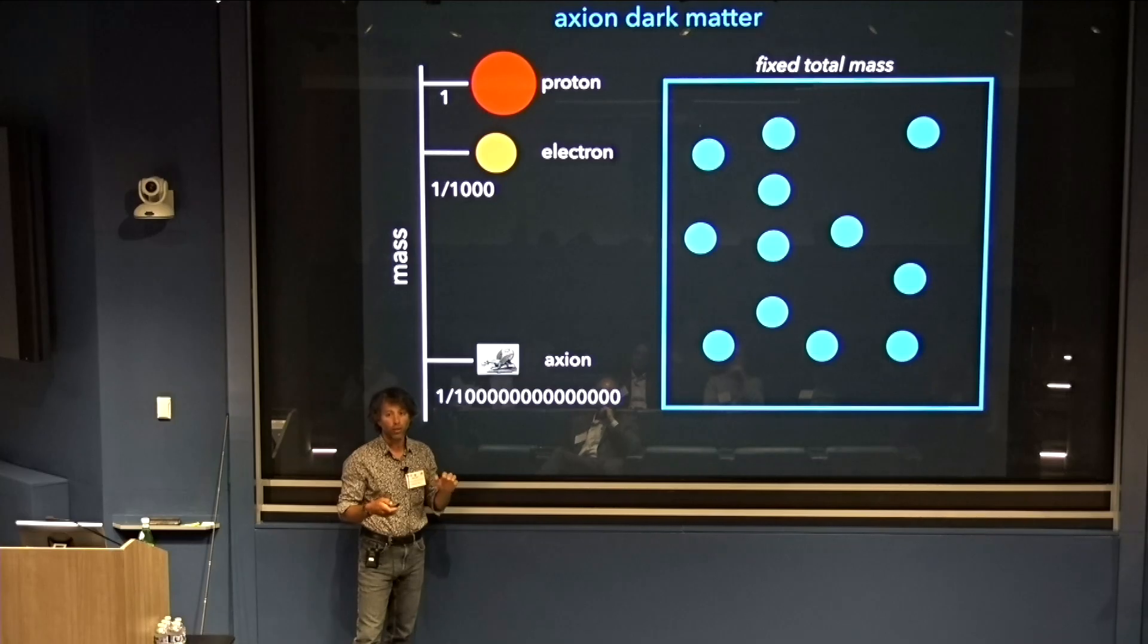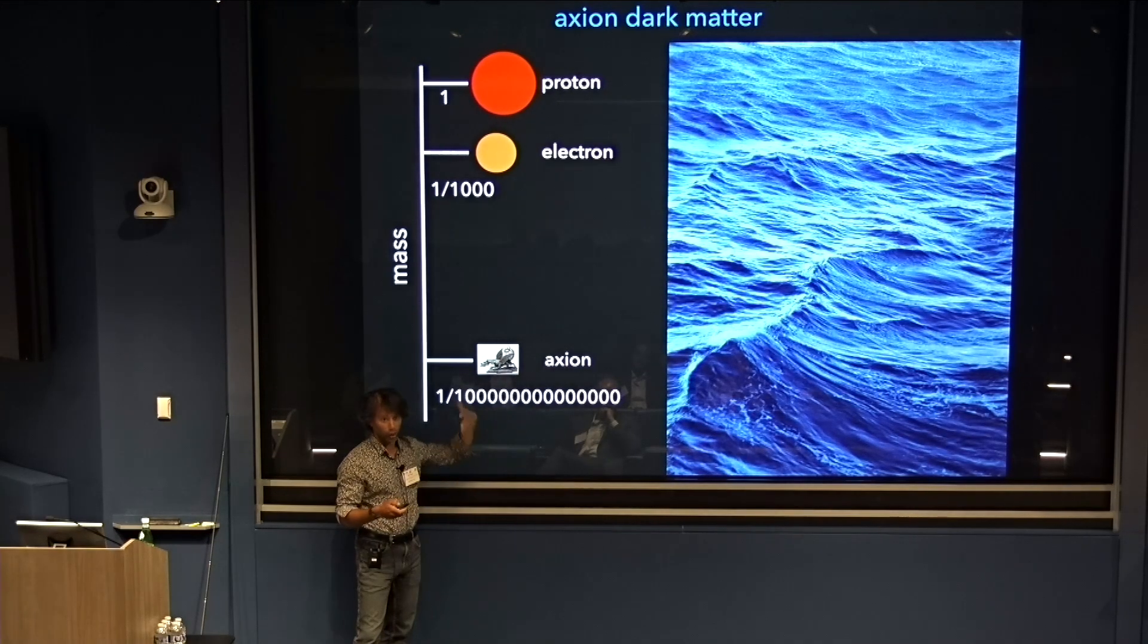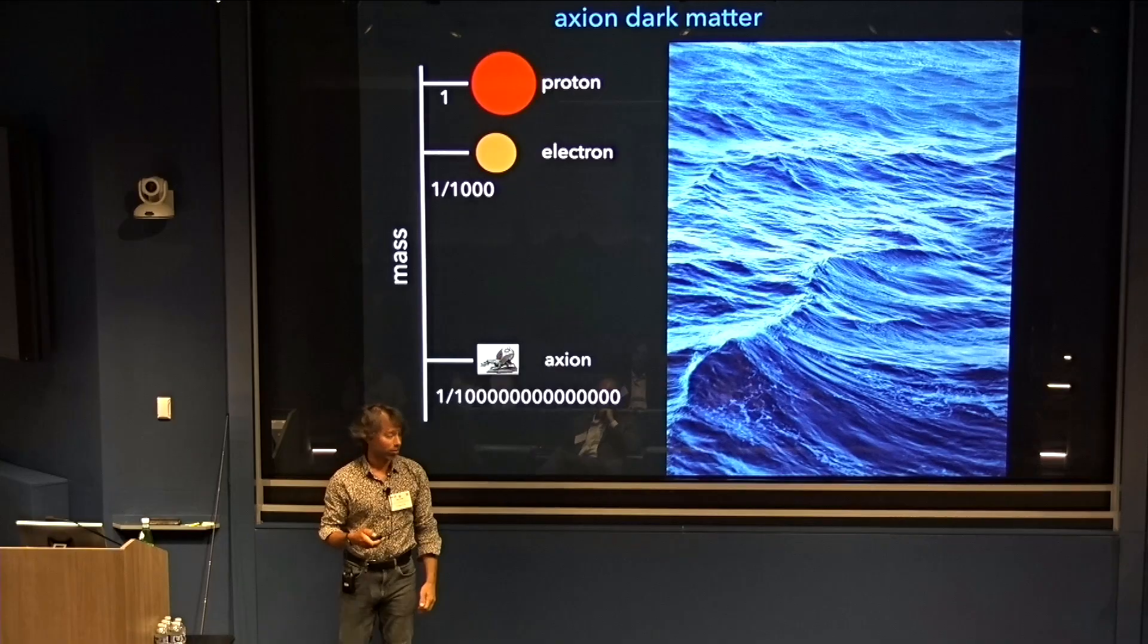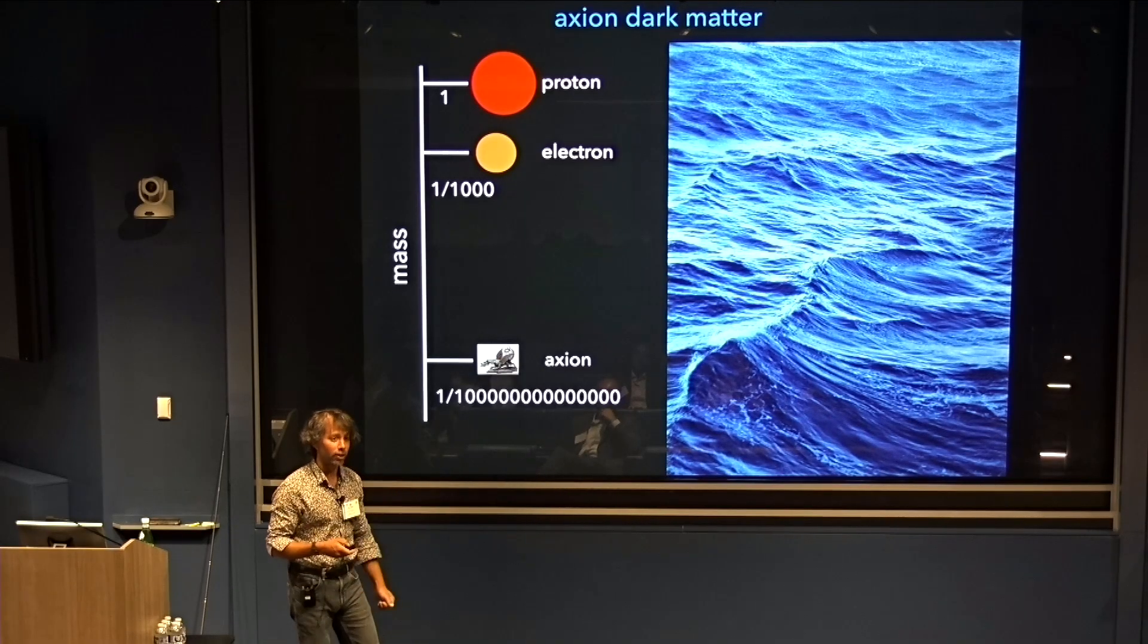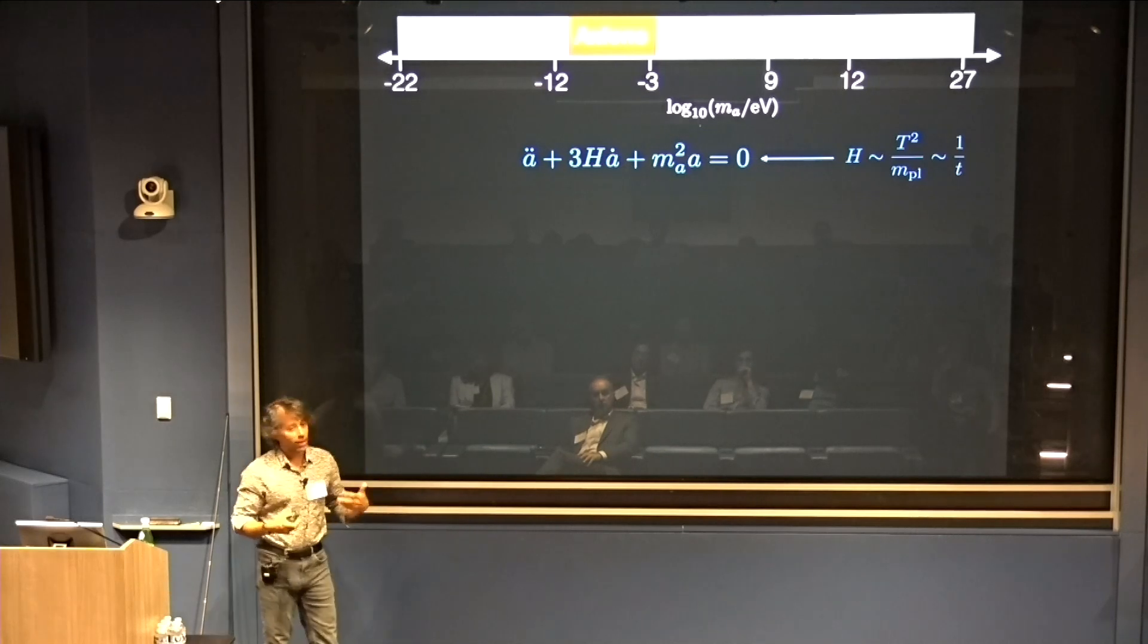Axions are bosons, so we can pack as many as we want. As we make the mass smaller and smaller going towards axions, eventually the quantum wave functions of these particles will overlap, and we'll change to having a classical description of this ensemble of particles. So when we talk about axion dark matter, we use the language of classical fields.